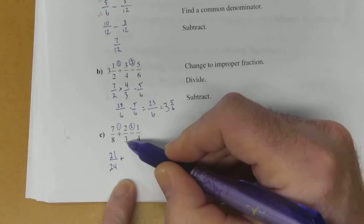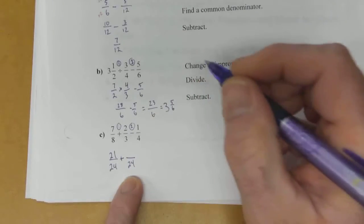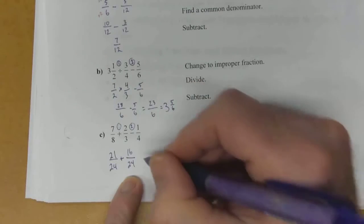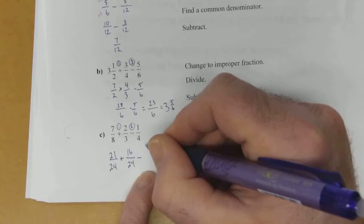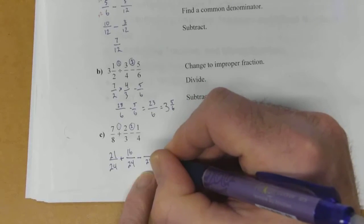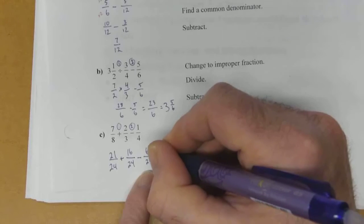3 times 8 to get you to 24. So if we're multiplying the bottom by 8, we have to multiply the top by 8. So 2 times 8 is 16. Now to go to 24 with the bottom of 4, we have to multiply that by 6. So 4 times 6 gives you 24. So 1 times 6 on top gives you that.